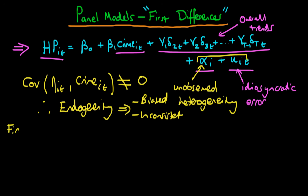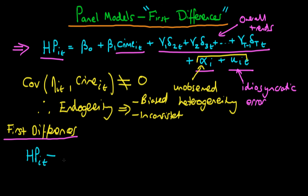This motivates the introduction of the first differences estimator. Rather than looking at the levels of house prices, we look at the first difference of house prices — that is, the house price in city i at time t minus the house price in city i at time t minus 1. We call this the first difference of house prices, denoted delta house prices it.